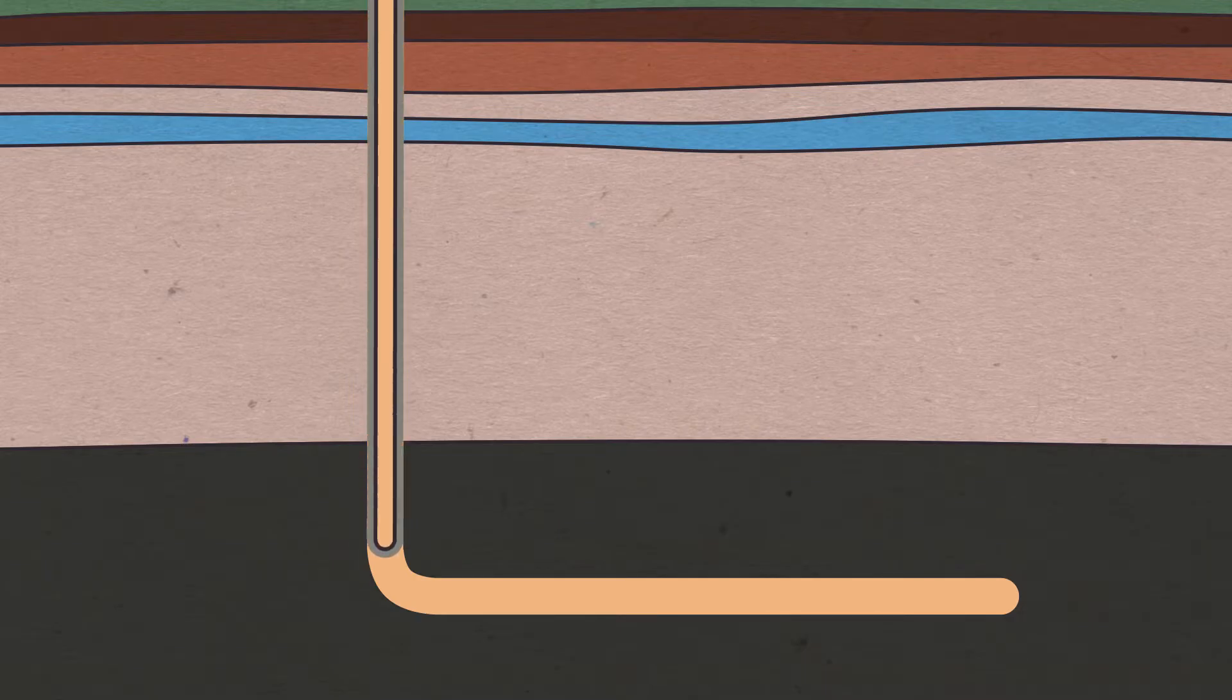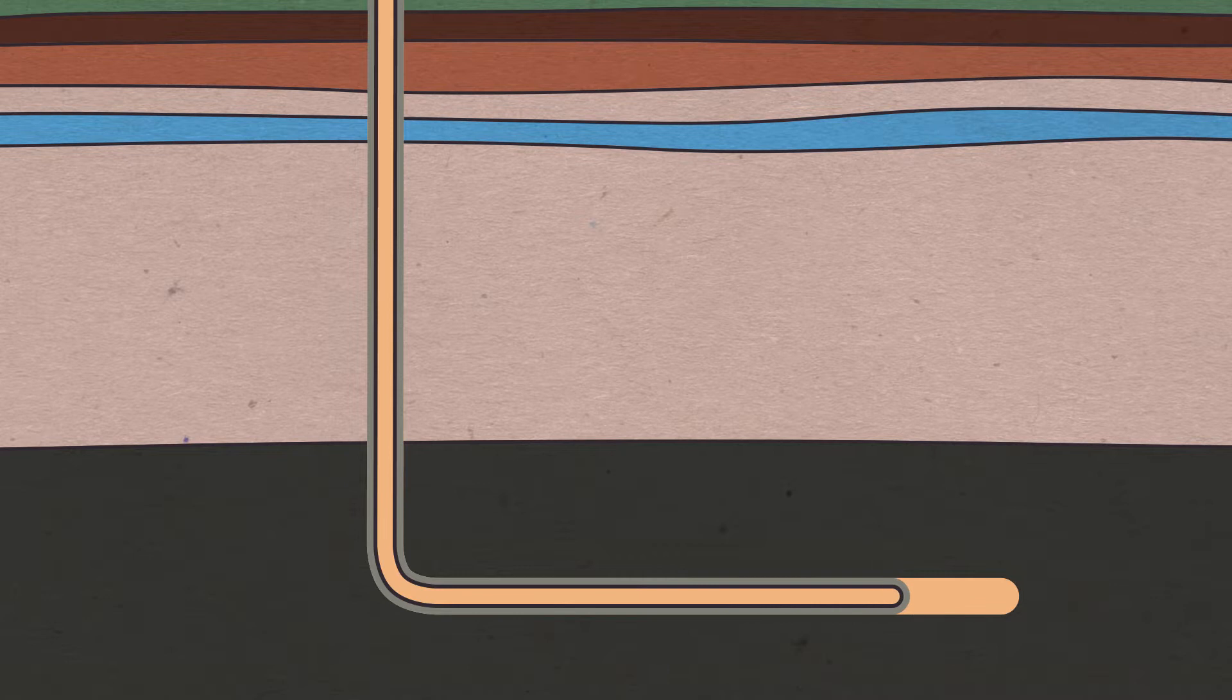After the well is drilled, the casing, which is a steel pipe, is run into the well and cement is pumped down behind it. This provides multiple barriers between the wellbore and the earth's formation so that there is no leaks or contaminations.